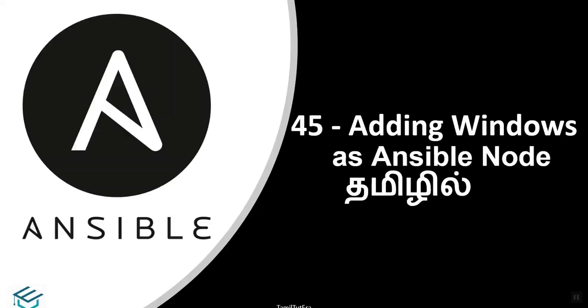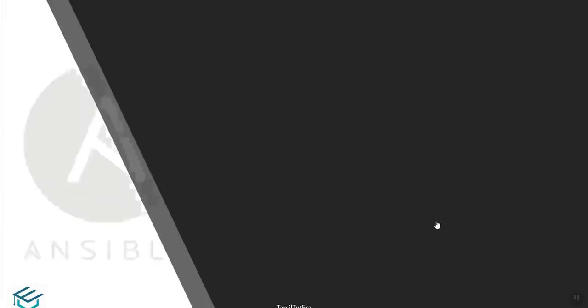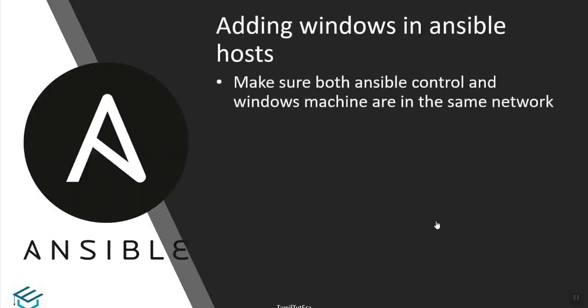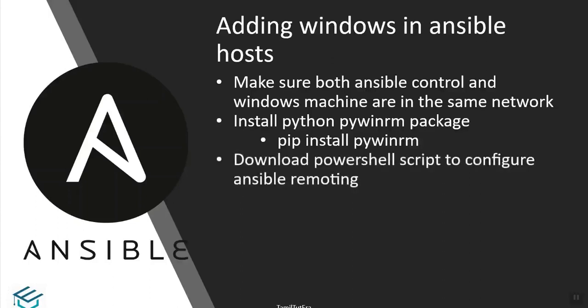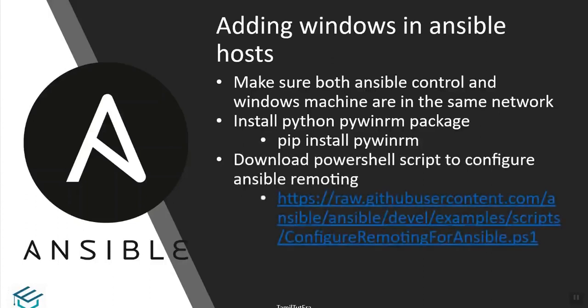We will install two OS. We will install Python on the control machine with PIP installed. Python version 2.7.5 or Python 3 is required. We will check Python packages. The PowerShell script is configured for Ansible remoting, and the script is in the description below.